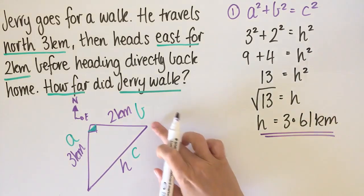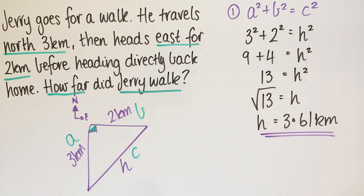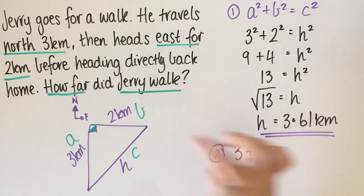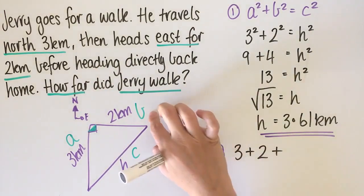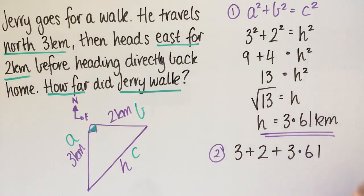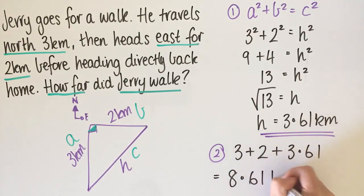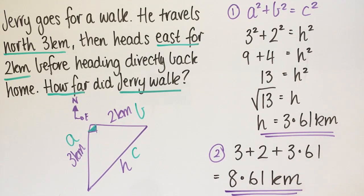Step two: find the total distance Jerry walked. That's 3 kilometres north, plus 2 kilometres east, plus 3.61 kilometres back home. 3 + 2 + 3.61 = 8.61 kilometres altogether.